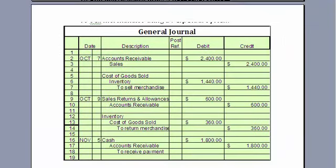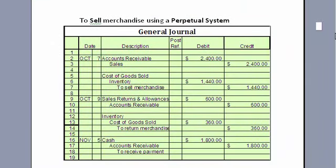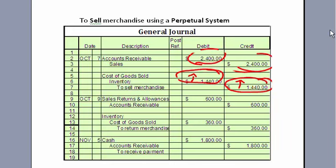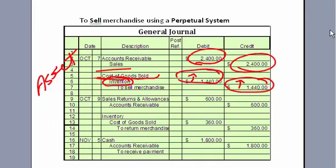If we sell inventory under a perpetual system, we have to make two journal entries. The first entry records cost of goods sold and takes inventory directly out. At the same time, we record accounts receivable and sales at the markup value. We're taking our inventory, which is an asset, and since we're giving it up, it becomes an expense because cost of goods sold is an expense account.